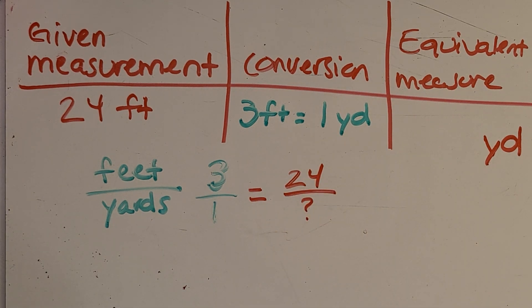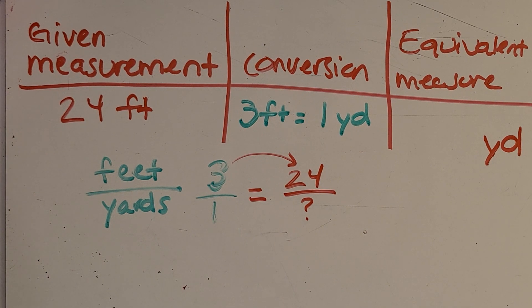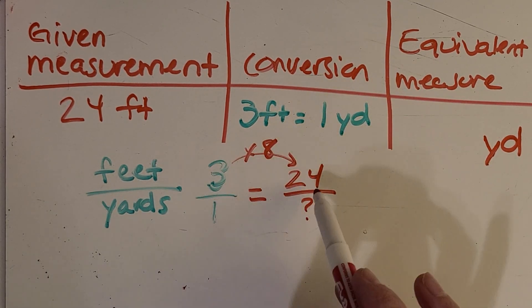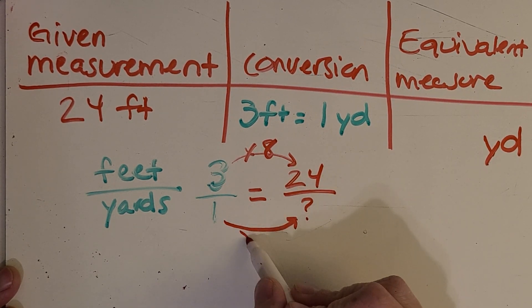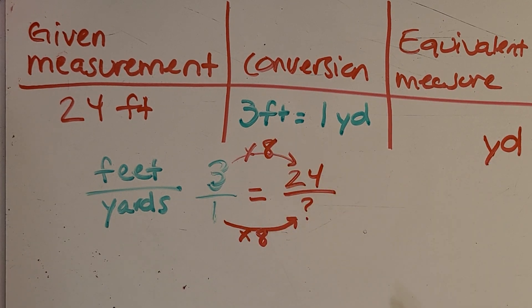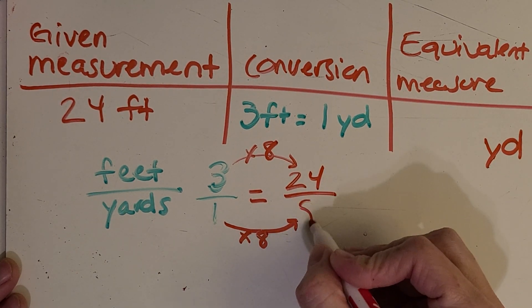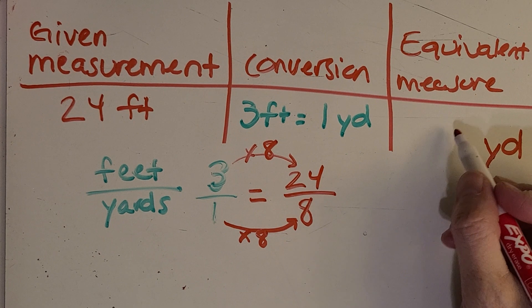What I love about proportions is that now it just looks like an equivalent fraction problem you're used to doing. We look for a pattern — how do I get from three feet to 24 feet? Times eight. And when you do something to the numerators, you do the same thing to the denominators — times eight. One times eight is eight. So 24 feet is equivalent to eight yards.